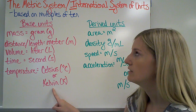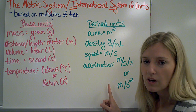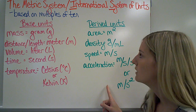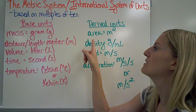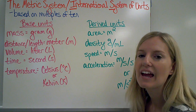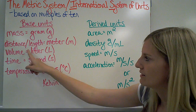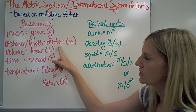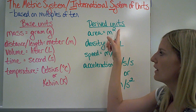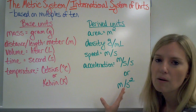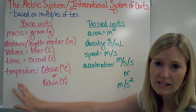From the base units, we get what we call derived units. We get these units from the base units. For example, if I'm figuring out the area of something, I take its length times its width. Well, length is measured in meters, so I would have meters times meters, which gives you meters squared. All of these come from a combination of my base units.